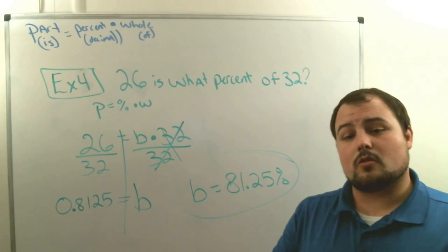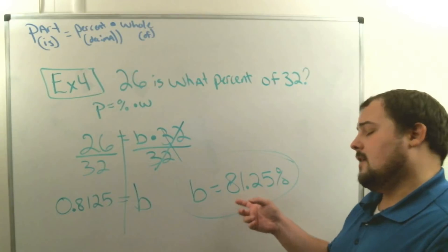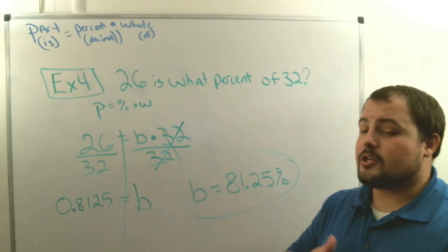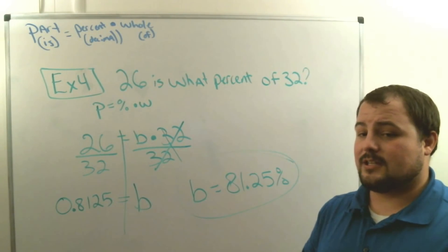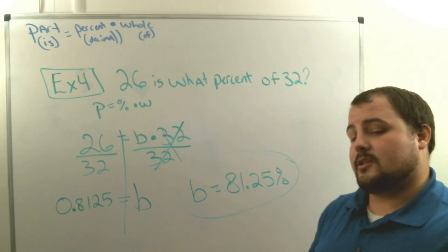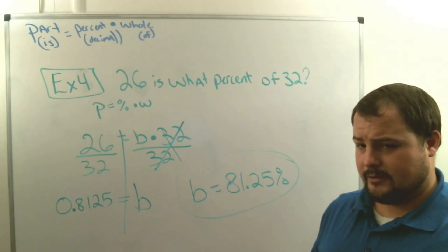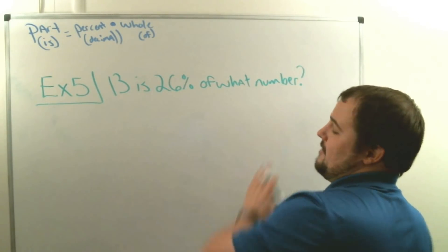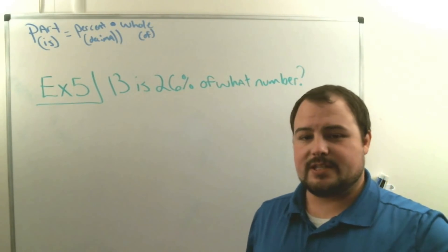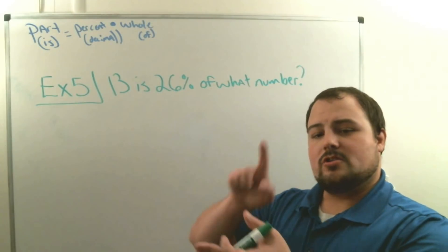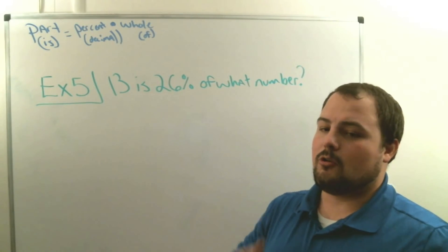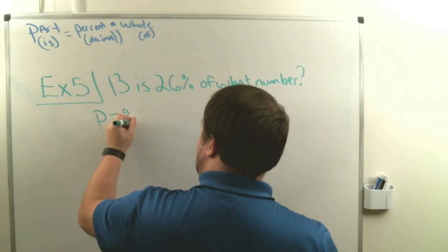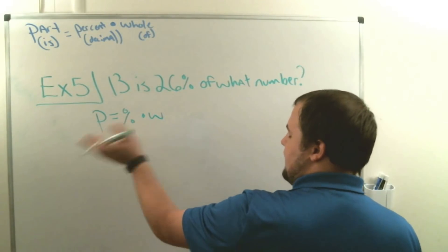If you had 26 questions right out of a 32-question test, you'd have an 81.25% — a pretty good grade! Hopefully you're starting to get this; if not, we'll practice in the classroom. Now let's look at finding the missing whole. Example five: '13 is 26% of what number?' We're missing 'of,' which means we're missing the whole.